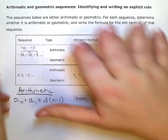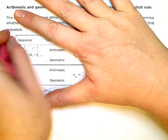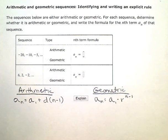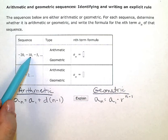To be arithmetic, I would have to be adding the same thing every time. So we know it has to be geometric, which means that I have to be multiplying by the same thing every time, or dividing.